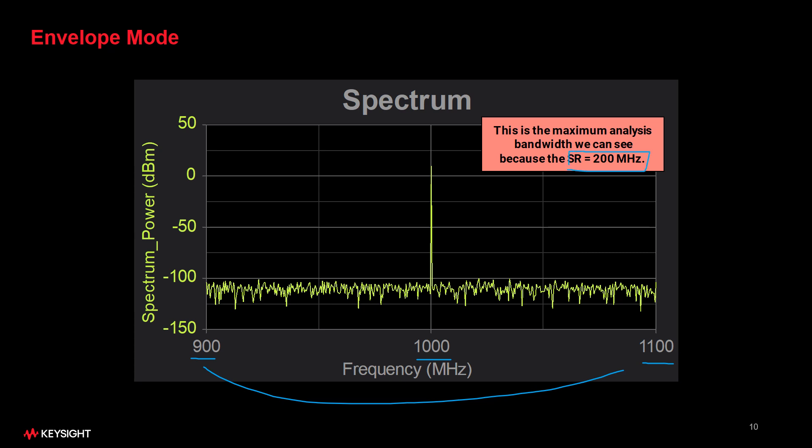So, sample rate always sets the maximum analysis bandwidth of these simulations. We can't zoom out any more than what we see in this picture. We're limited to 200 MHz of analysis bandwidth. We traded this limitation in order to gain the tremendous speed advantage of envelope.